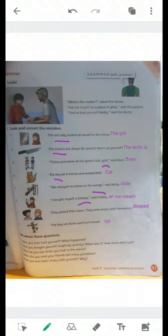Number seven, they passed their exam, they were angry with themselves. They were very pleased. Number eight, the boy sat down and hurt himself. He fell down, not sat down. So the wrong word is sat. Check your answers please.